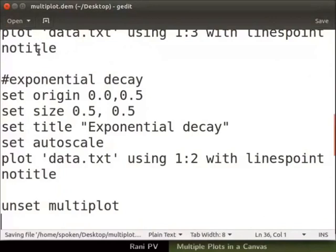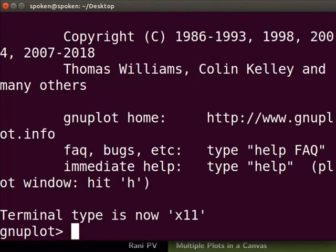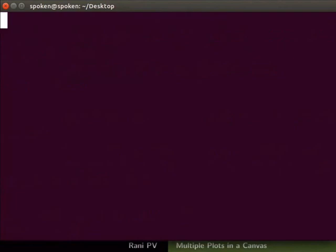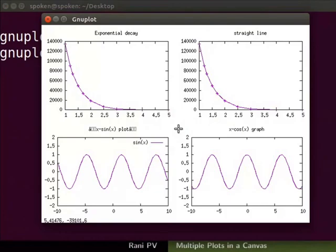Minimize the gedit window. Go to the terminal. Let's open gnuplot. I will also clear the screen. Let's run the script to generate the multiplot. Enter the command load space in single quotes multiplot.dem. A graphics window with 4 graphs appear in the canvas.